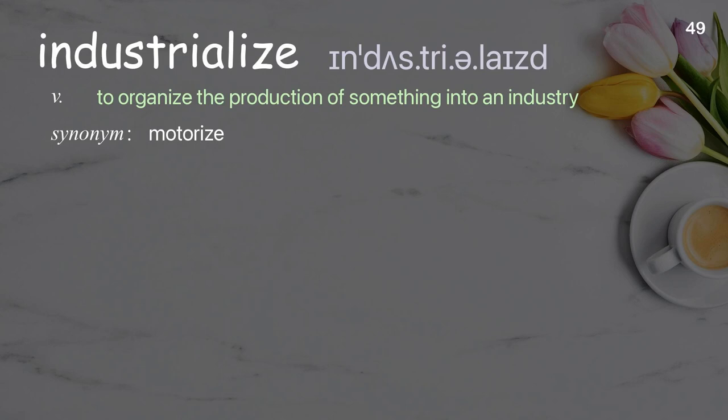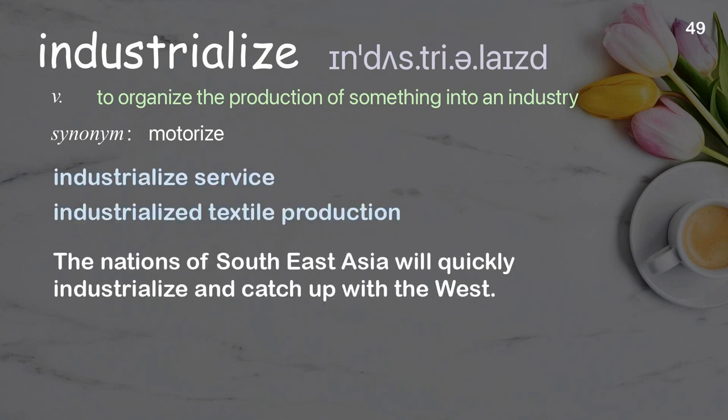Industrialize: to organize the production of something into an industry. Examples: industrialized service, industrialized textile production. The nations of Southeast Asia will quickly industrialize and catch up with the West.